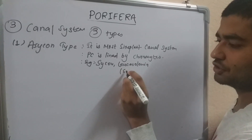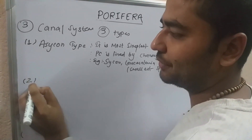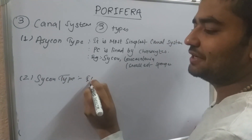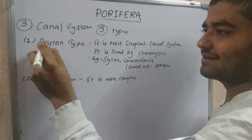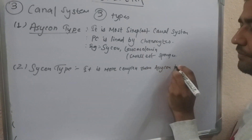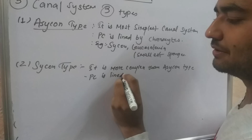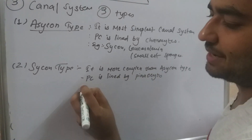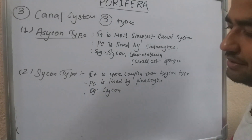The second type is the Sycon type, which is more complex. The paragastric cavity is lined by Pinacocytes. Sycon (also called Scypha) is an example of the Sycon canal type.